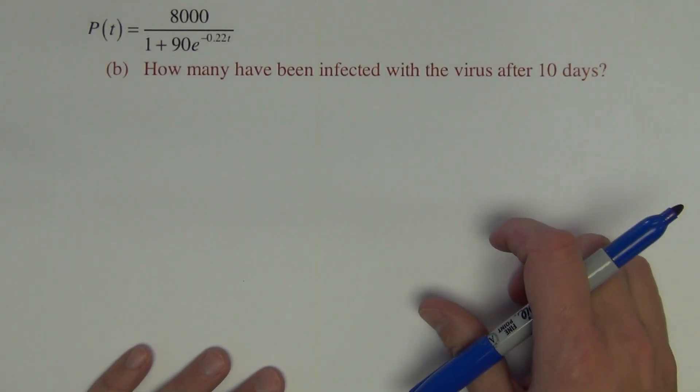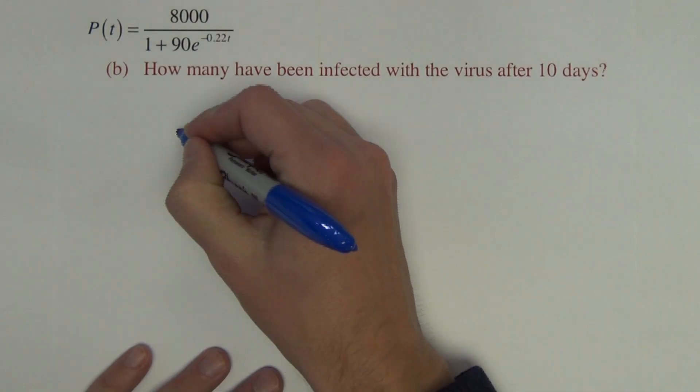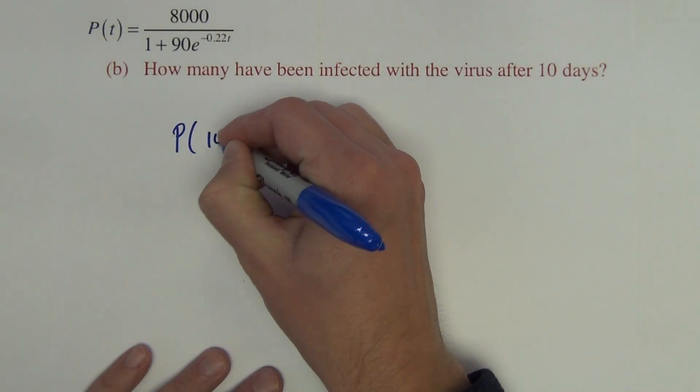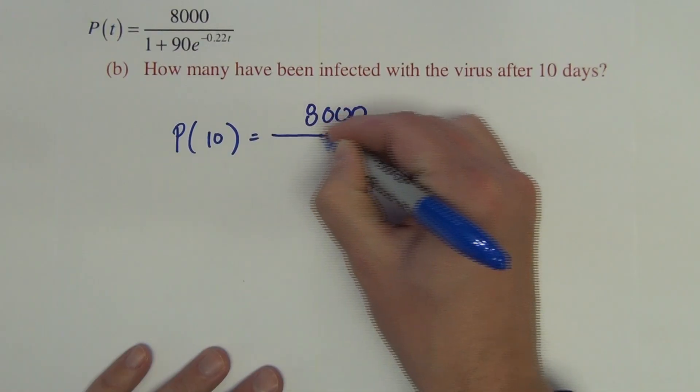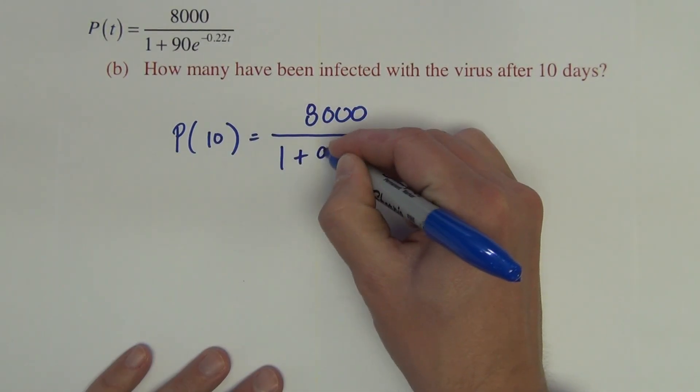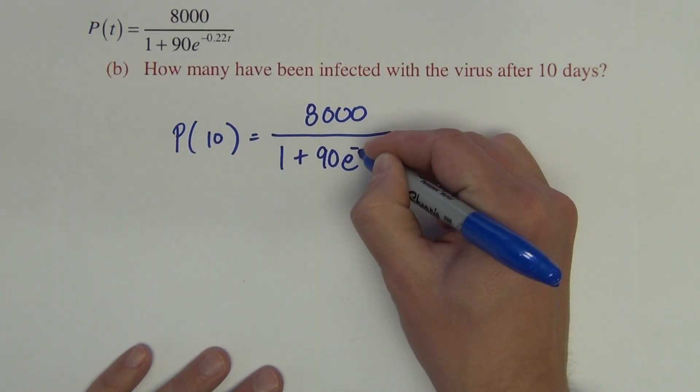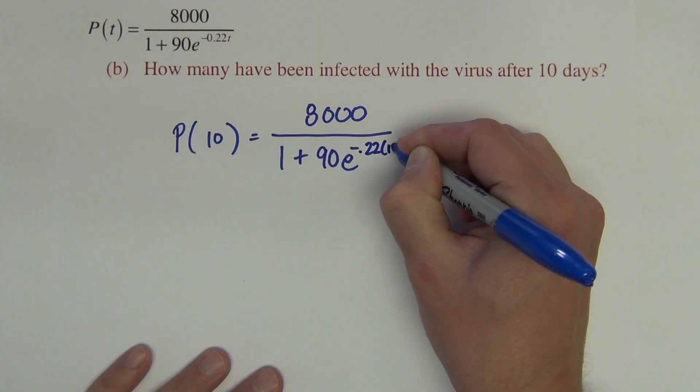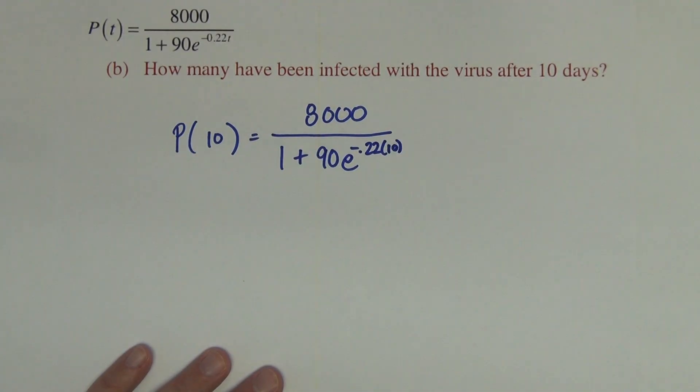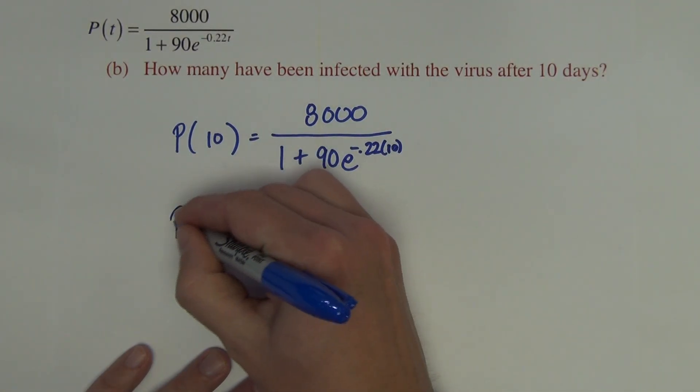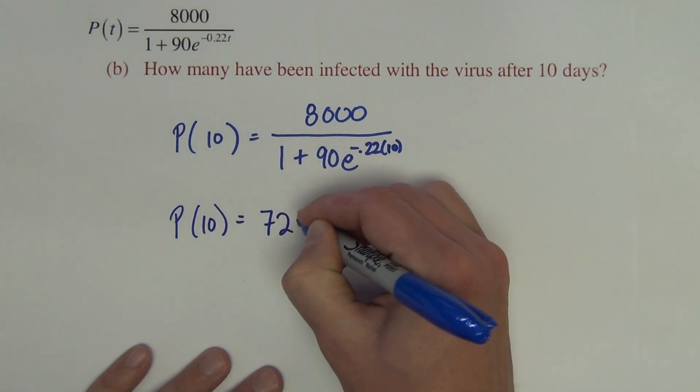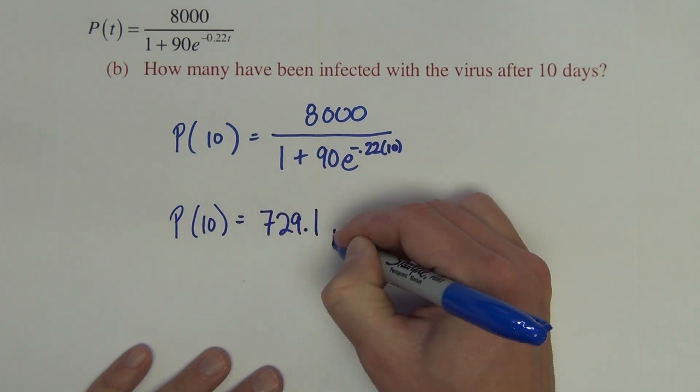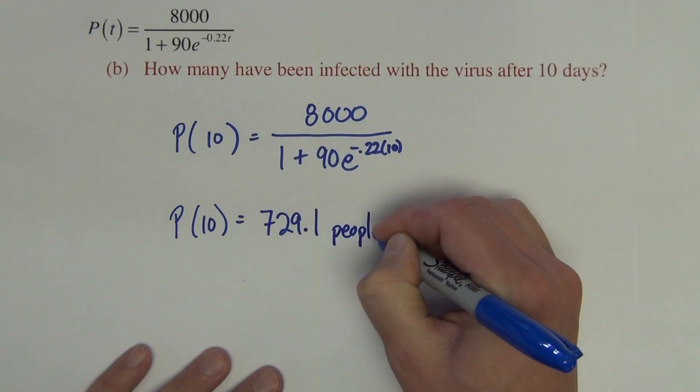Question B. How many have been infected with the virus after 10 days? So P(10) is 8,000 times 1 plus 90e raised to the negative .22 times 10. The correct answer here is P(10) is 729.1 people.